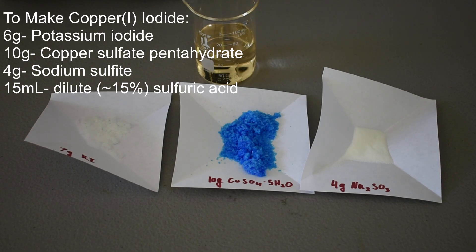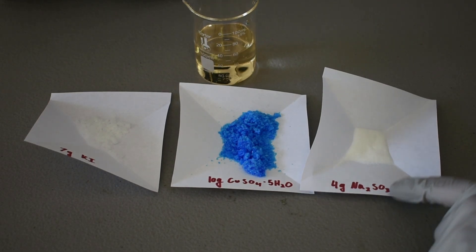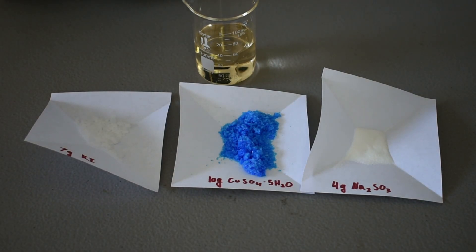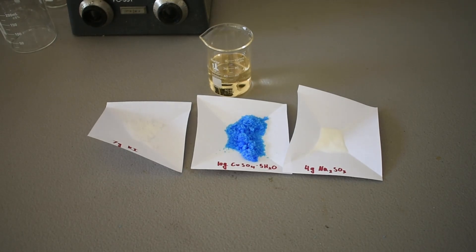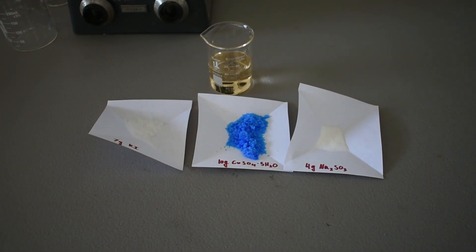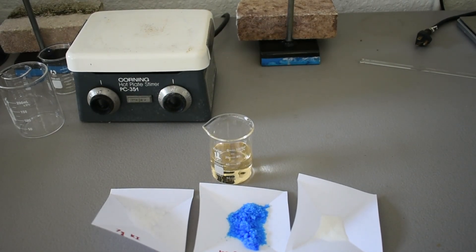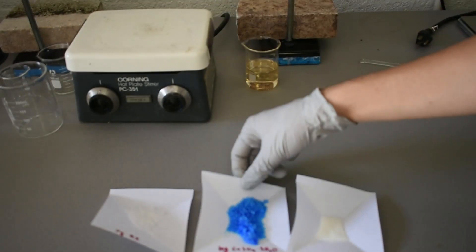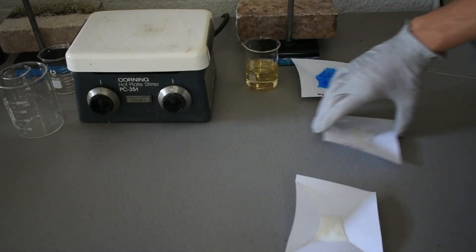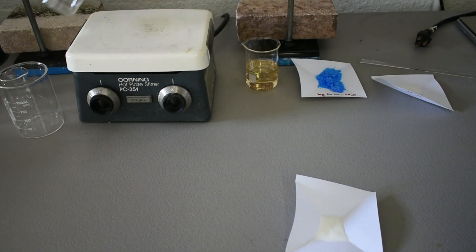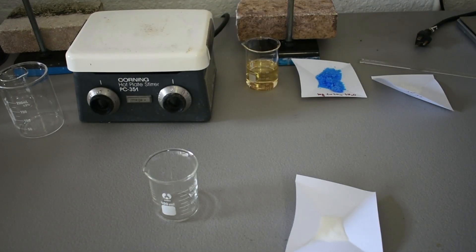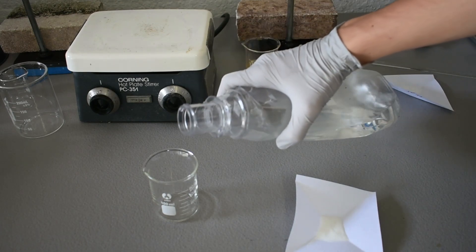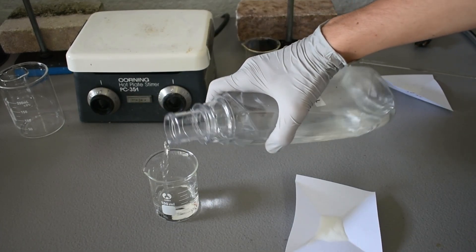So to start out, what we're going to do is dissolve 4 grams, which is what we have here, of the sodium sulfite in about 40 milliliters of water. I'm going to zoom on out again. I'm going to get a 100 milliliter beaker and add 40 milliliters of water. And in this preparation, exact quantities aren't very necessary, so just eyeball it.